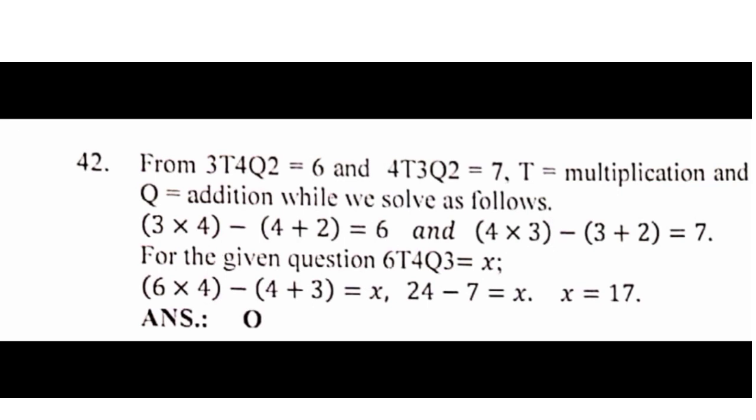So, for the equation they give, it becomes 6 times 4 minus 4 times 3, which is equal to x. So, cross over to the other side, it becomes x is equal to 24 minus 7, which is equal to 17. So that is how to solve that particular question.